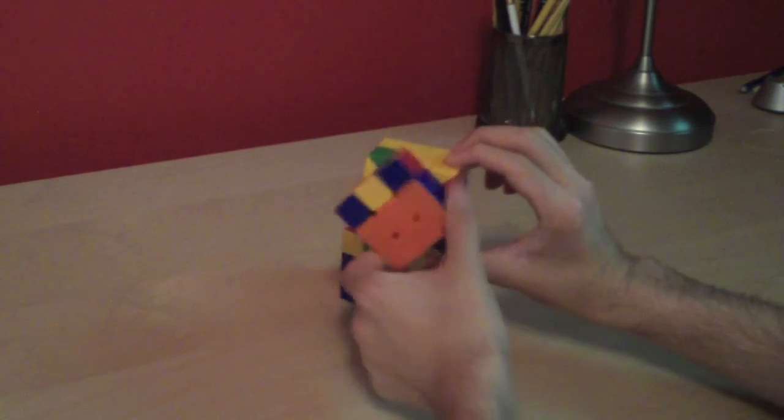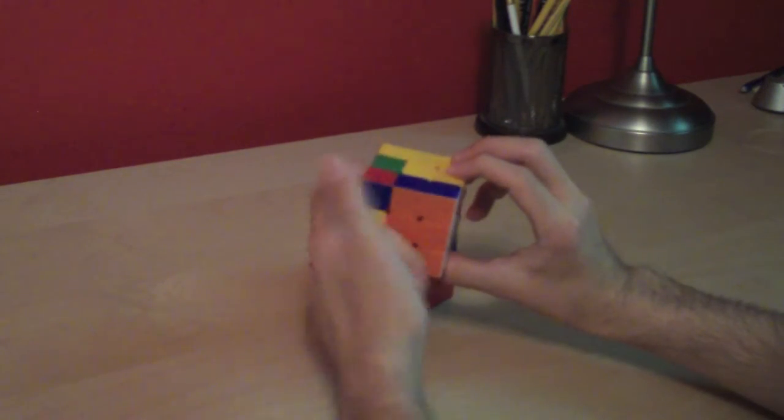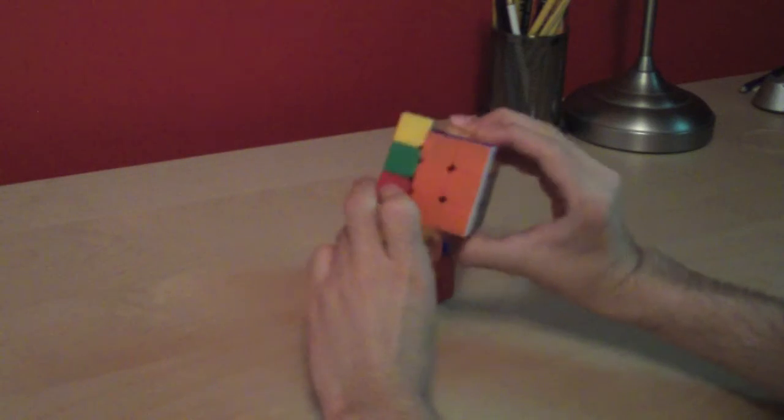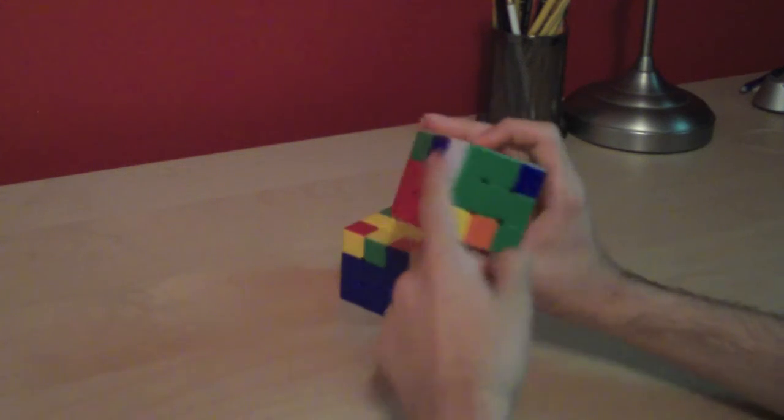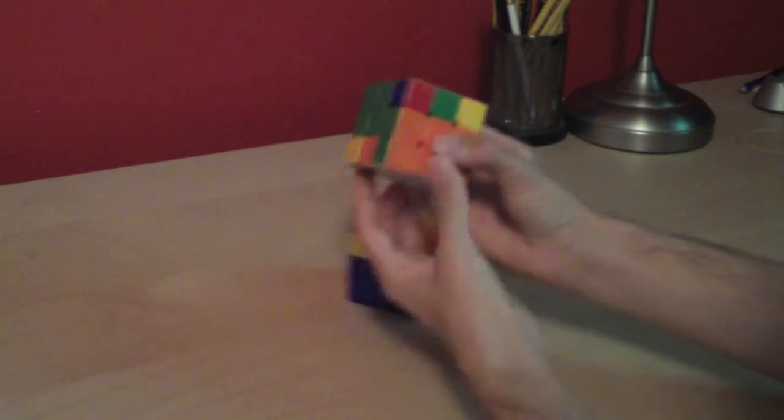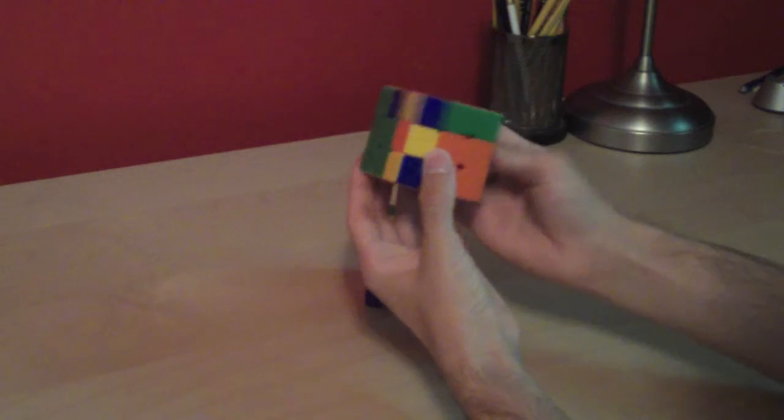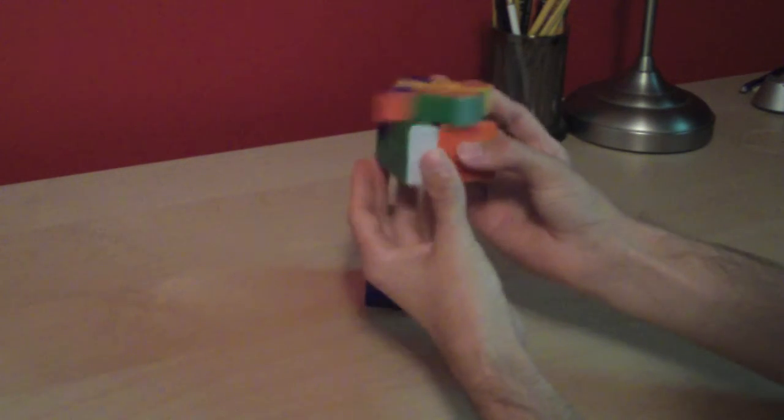Then I'm going to knock it down so it's correct. Replace it with the other bad edge. Bring it back up the opposite way. And now here's our F2L pair. Here's our block. So in order to insert the F2L pair back in, we can do that.